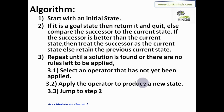Here is the algorithm: start with an initial state; if it is the goal state, return it and quit. Otherwise, compare the successor to the current state — if the successor is better, treat it as the current state; else retain the previous current state. Repeat until a solution is found or no rules are left to apply. Select an unapplied operator, apply it to produce a new state, and jump back to step two.